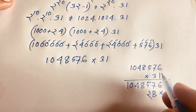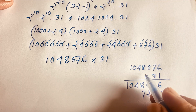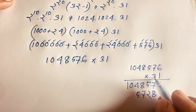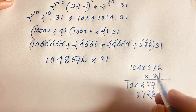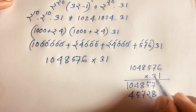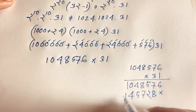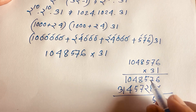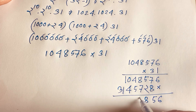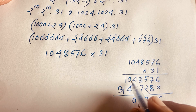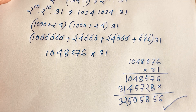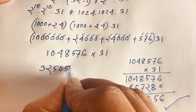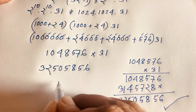Continuing the multiplication of 1,048,576 by 31: multiplying by 1 gives 1,048,576 and multiplying by 3 gives 3,145,728. Adding those together gives the final answer: 32,505,856. So 32⁵ minus 32⁴ equals 32,505,856.